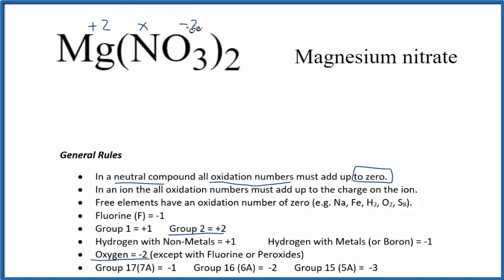We have all this information and that should all add up to zero. Let's set up an equation: +2 plus, in parentheses, X - 2 times 3, because we have three oxygen atoms, each one -2.